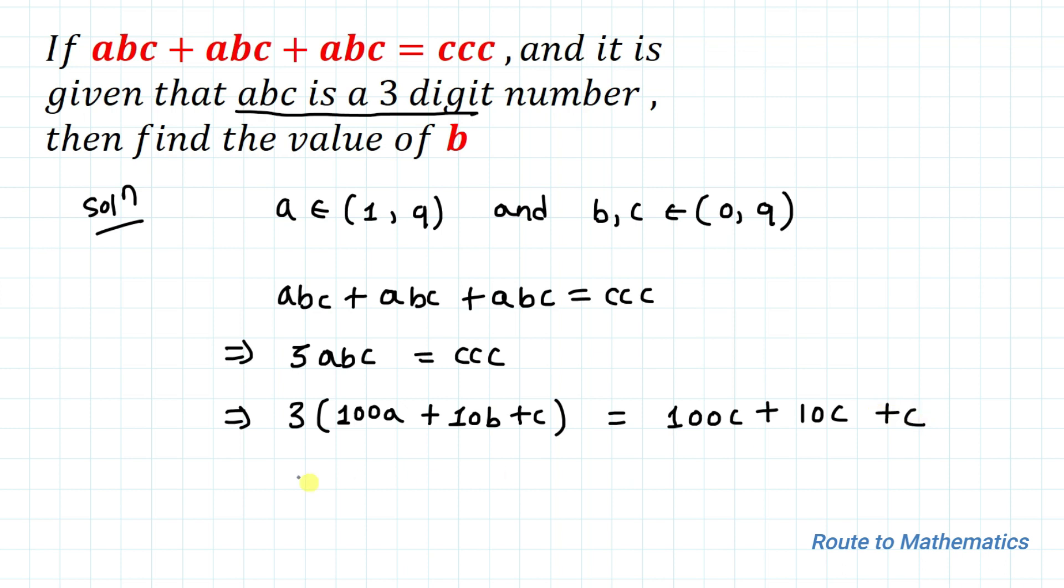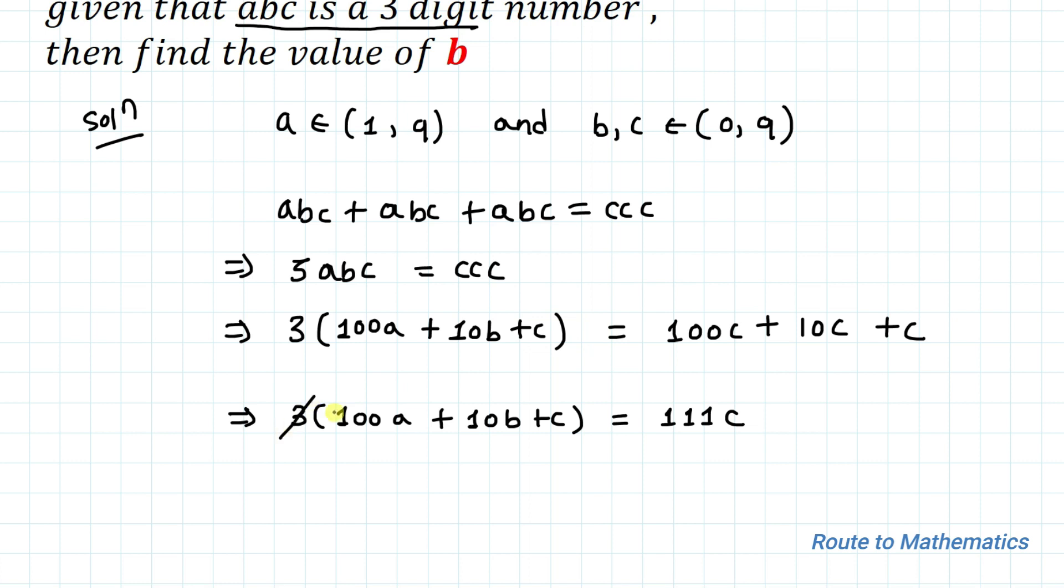This implies 3 times (100A plus 10B plus C) equals 111C. Here 3 and 111 get cancelled out by 37. So we have 100A plus 10B plus C equals 37C. Let's take this C to the right-hand side, so we have 36C.